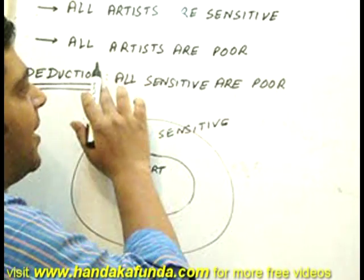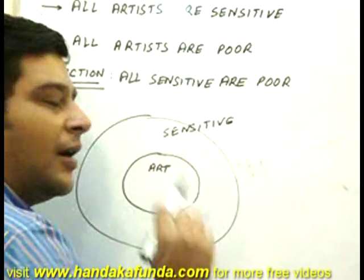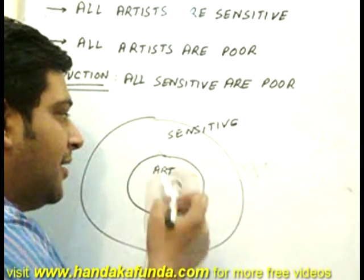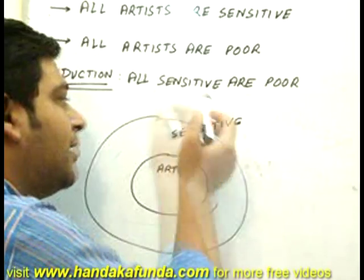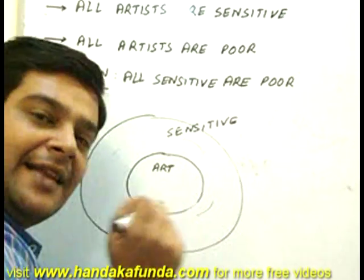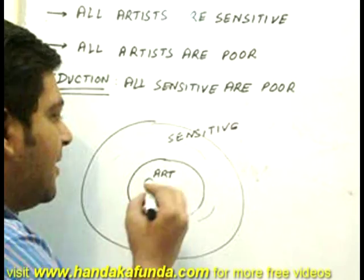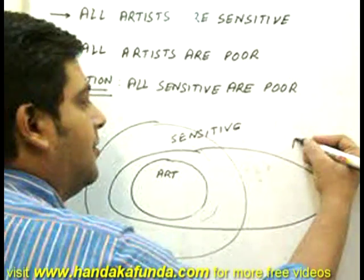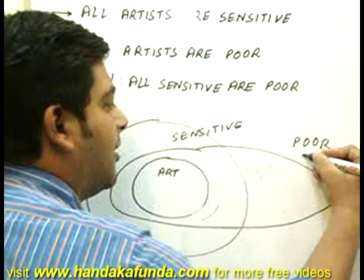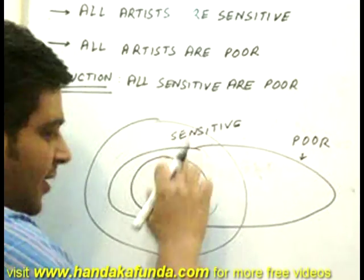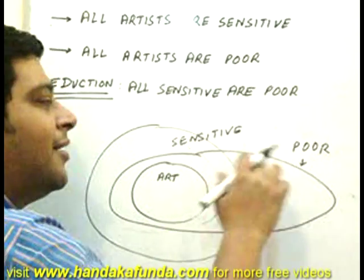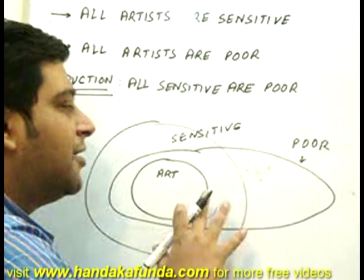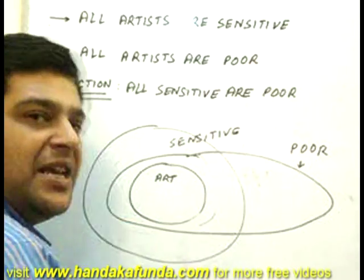Now the minor premise is that all artists are poor, and this is the careful part. All my artists should be inside the poor set. Is my poor set here or is my poor set outside? That is the common mistake that people make. Your set for poor should be something like this, because what does this represent? That all artists are poor — some of them may be sensitive as well, and some of them may be insensitive as well. So this is the correct representation of the data given to me in the major and the minor premise.